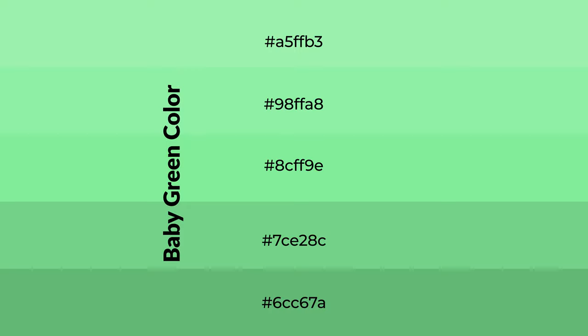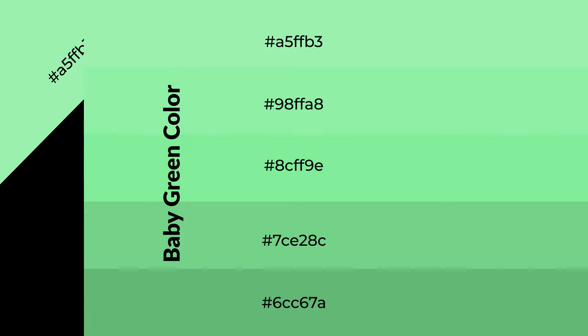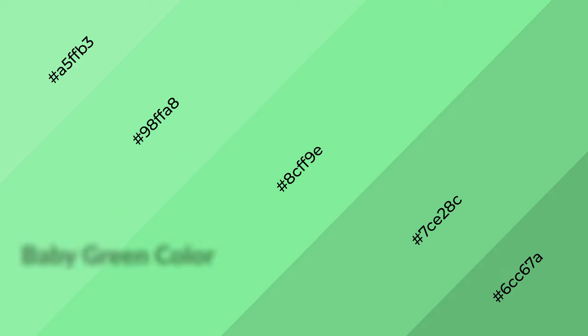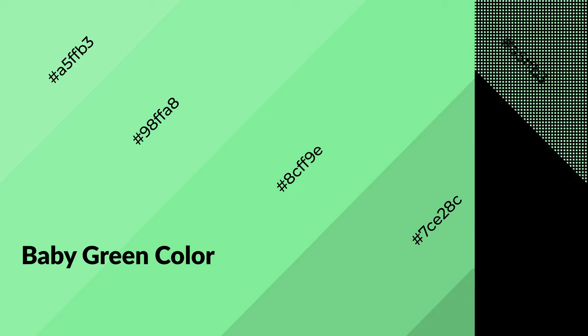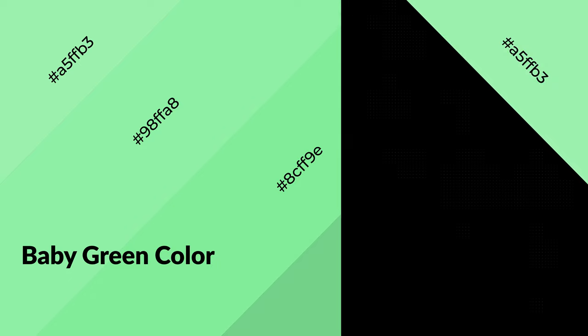To generate shades of a color, we add black to the color. Shades are used in patterns, 3D effects, and layers — they create depth and drama. Baby green is a cool color and it emits calming, serene, soothing, refreshing, spacious emotions.